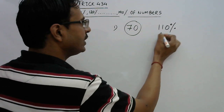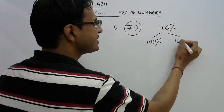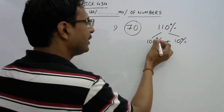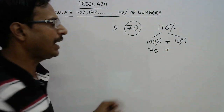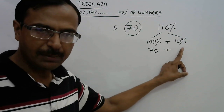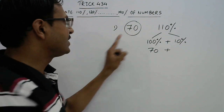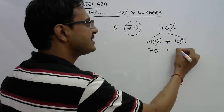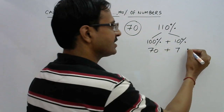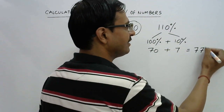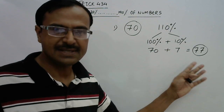Take a simple example: the number is 70 and we need to calculate 110% of it. Consider 110 as 100 plus 10. 100% of any number is the number itself, and 10% is obtained by placing a decimal one digit from the right — so 10% of 70 is 7. Therefore 110% of 70 is 77.